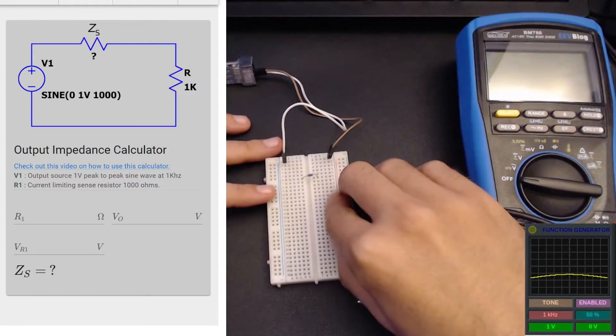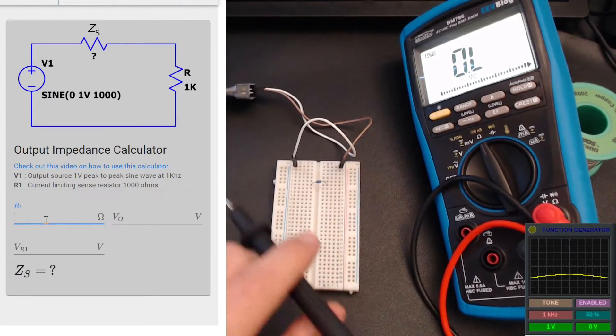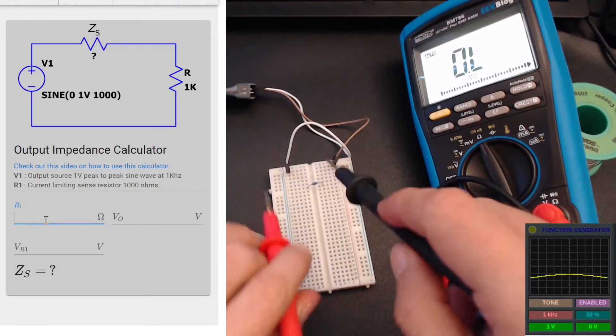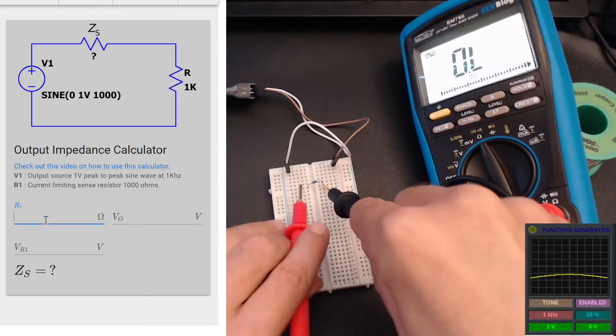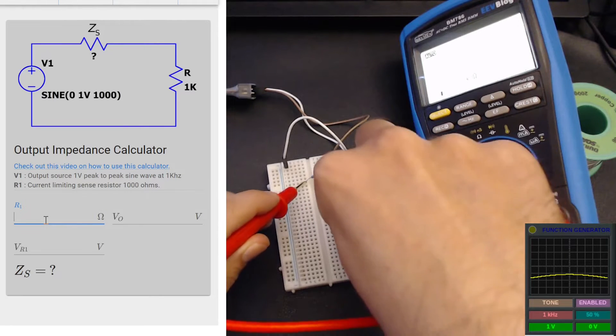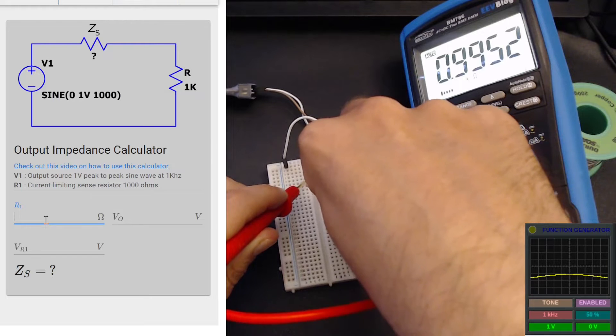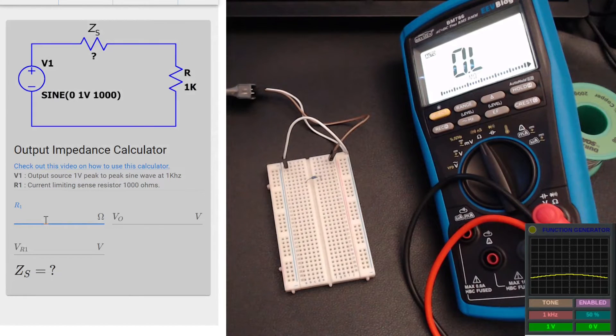First I want to get a clear read on my resistor. I know it's 1 kilohm but I want to get a more accurate read on it and get rid of the component tolerances. It's 995.2 ohms. I'll just pop that into the tool.